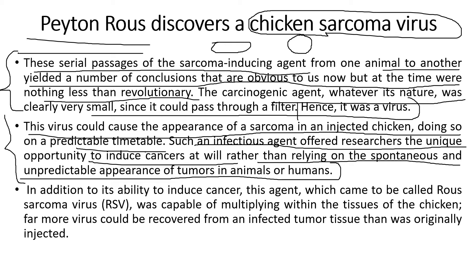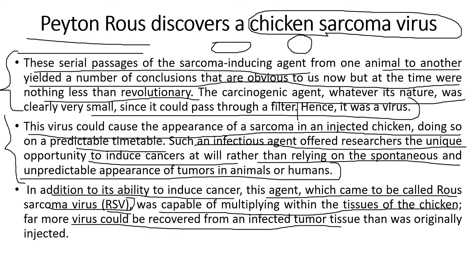In addition to its ability to induce cancers, this agent came to be called the Rous Sarcoma Virus. After testing the virus on different organisms and checking its viability and ability to induce cancers, researchers named this particular virus the Rous Sarcoma Virus — or RSV. It was capable of multiplying within the tissues of a chicken, and far more virus could be recovered from an infected tumor tissue than was originally injected.